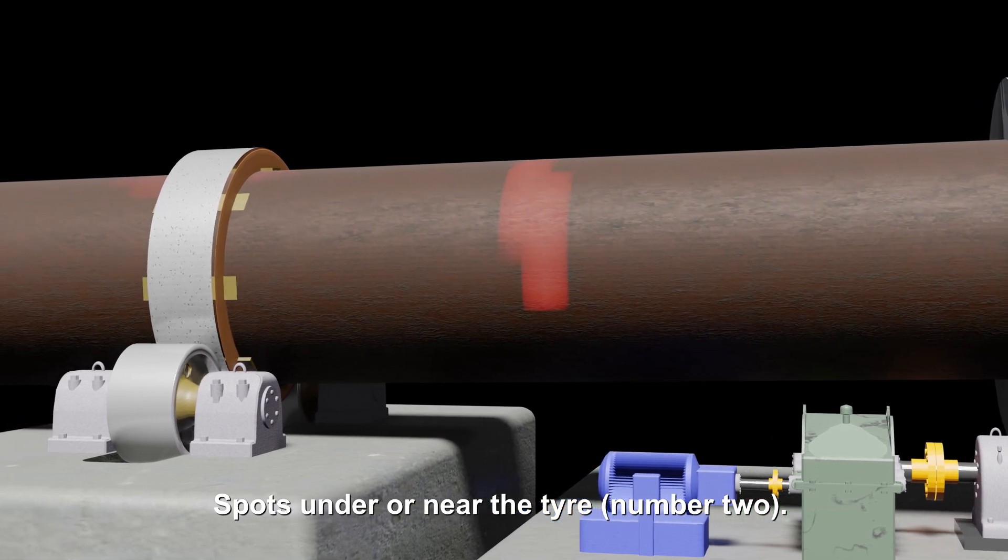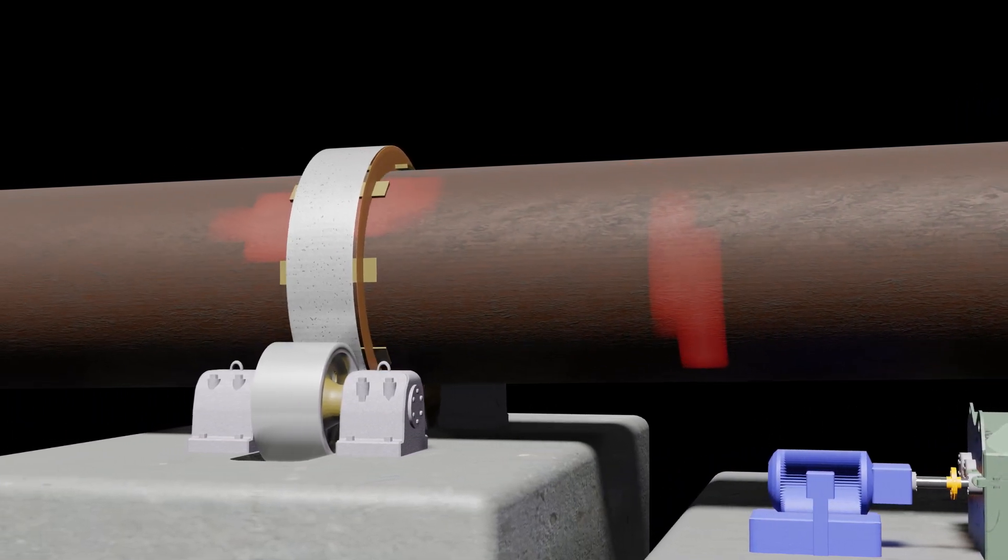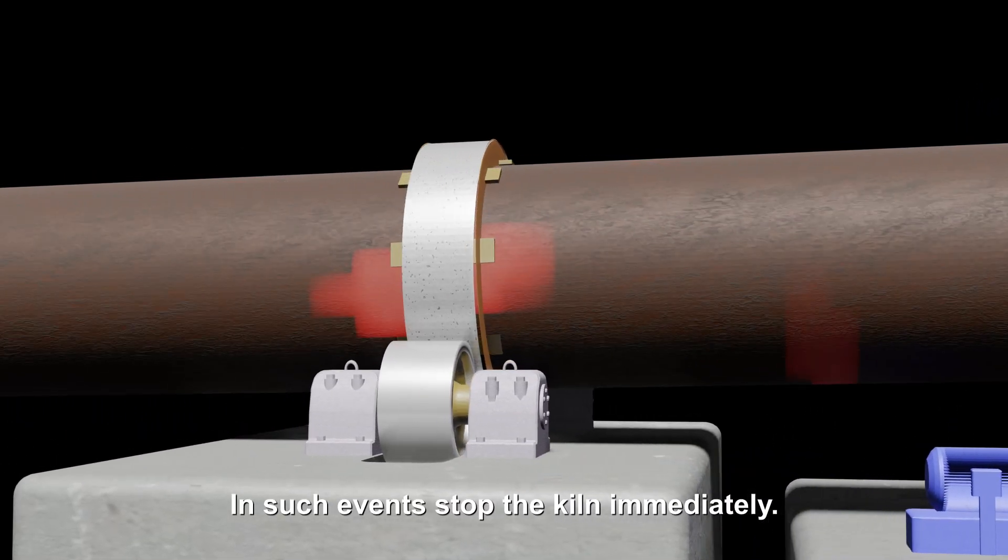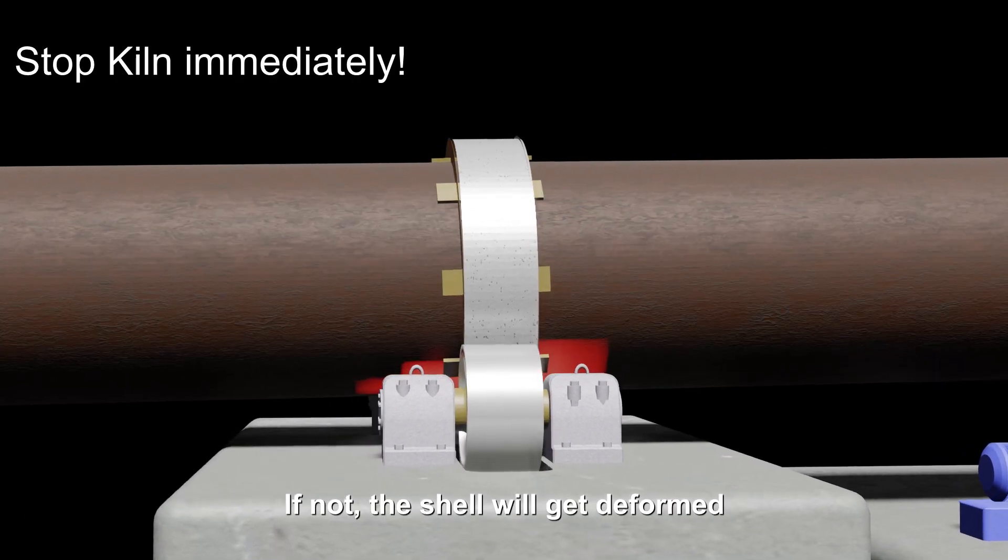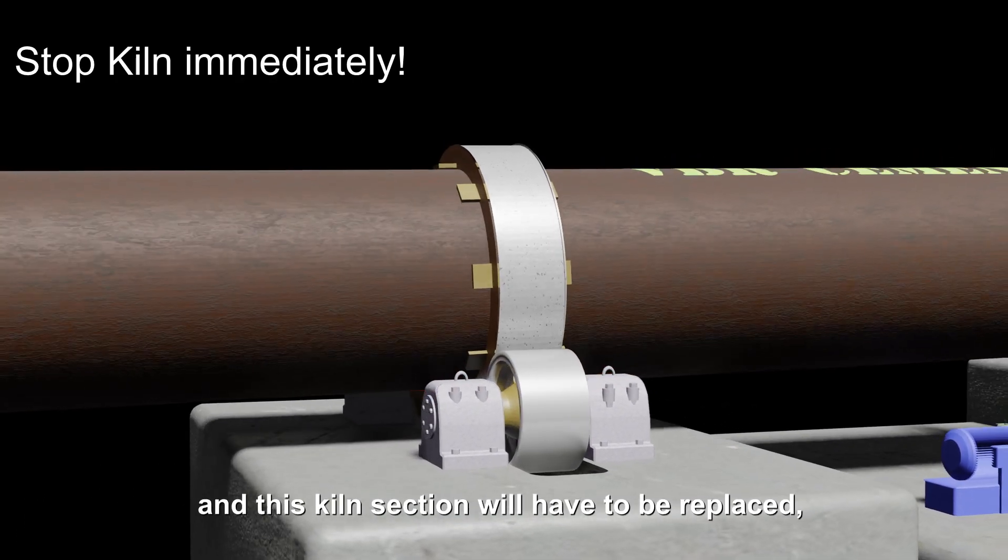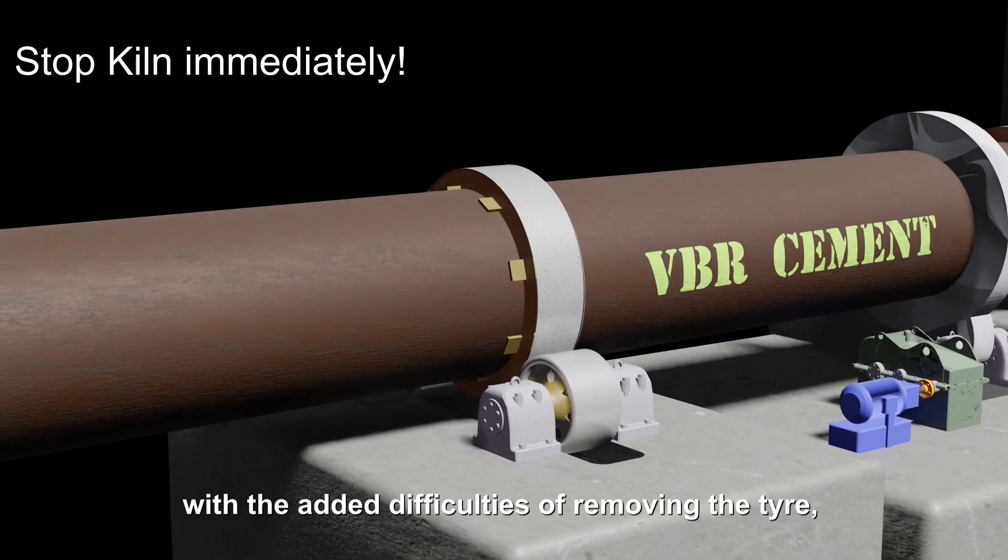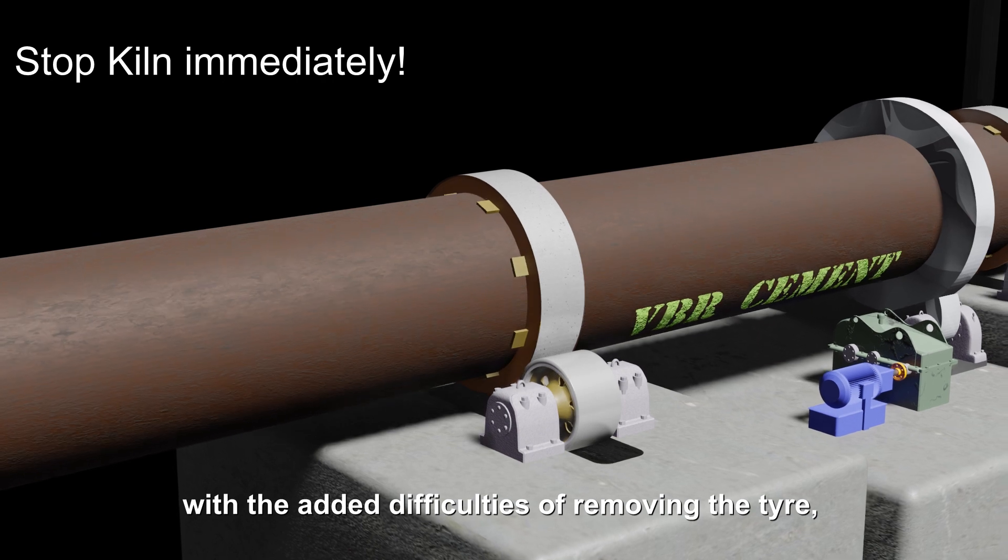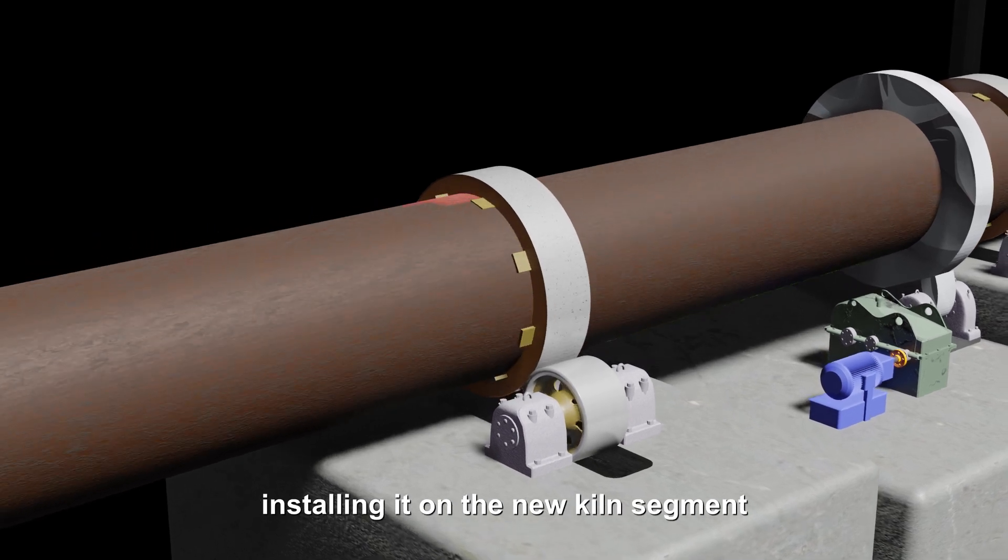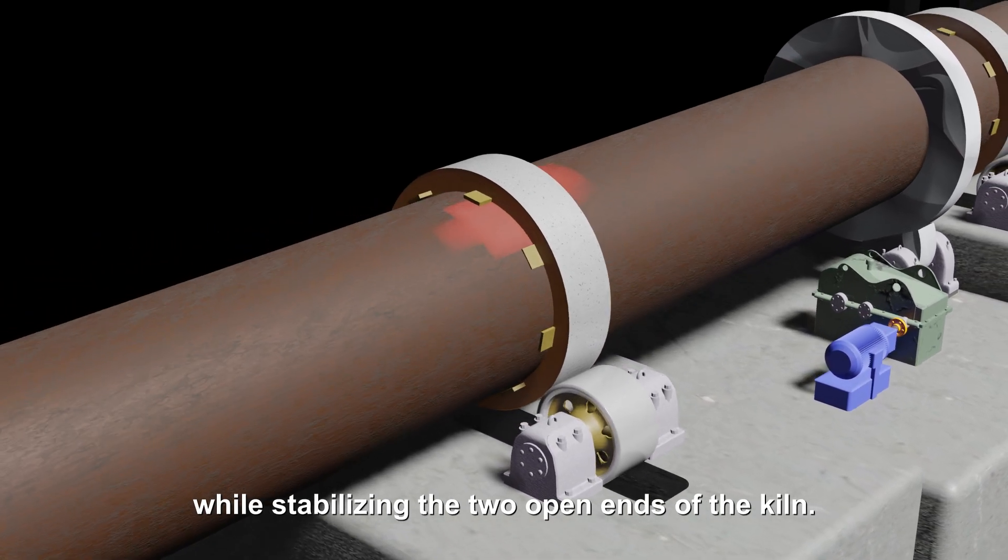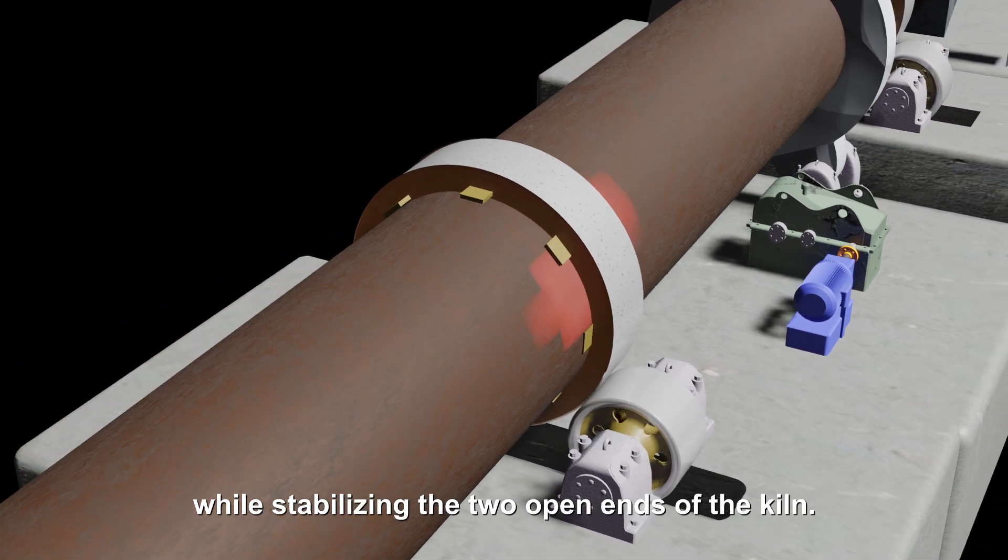Spots under or near the tire: in such events stop the kiln immediately. If not, the shell will get deformed and this kiln section will have to be replaced, with the added difficulties of removing the tire, installing it on the new kiln segment while stabilizing the two open ends of the kiln.